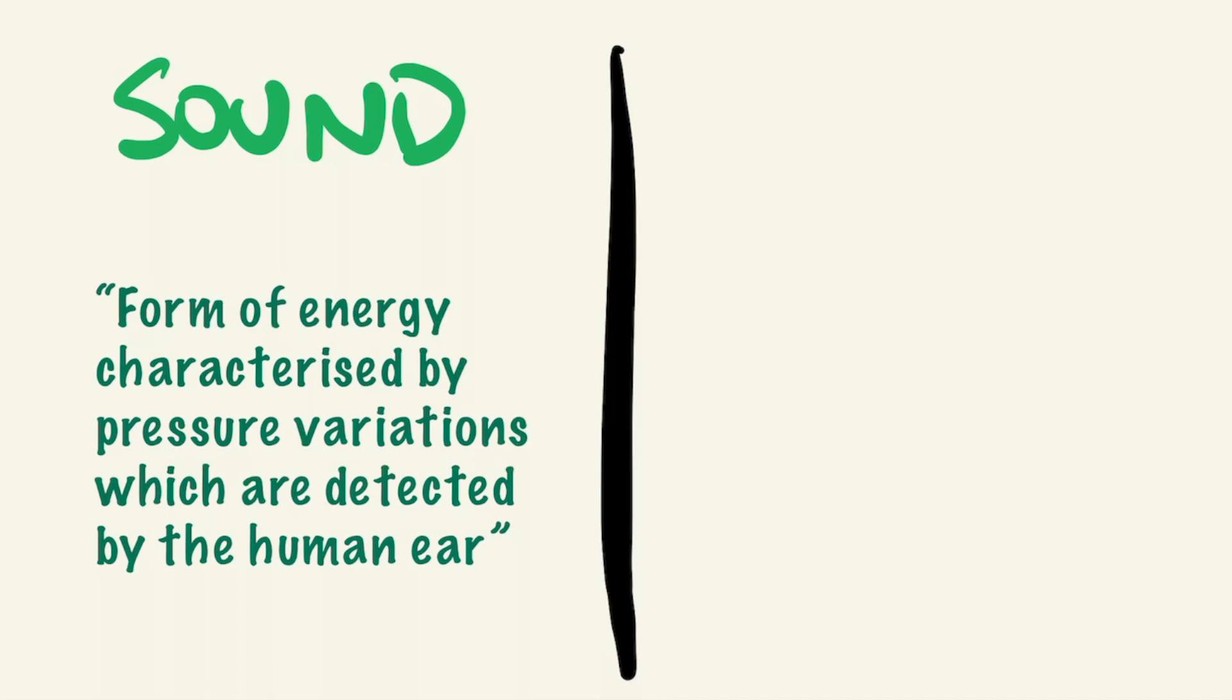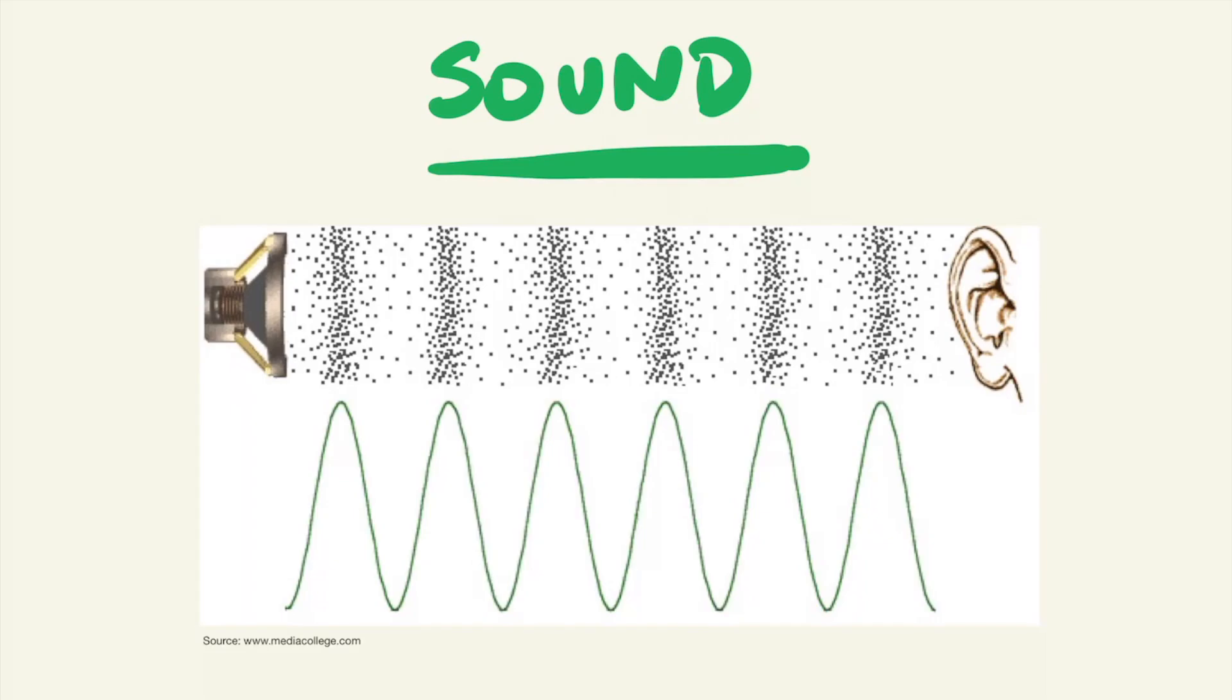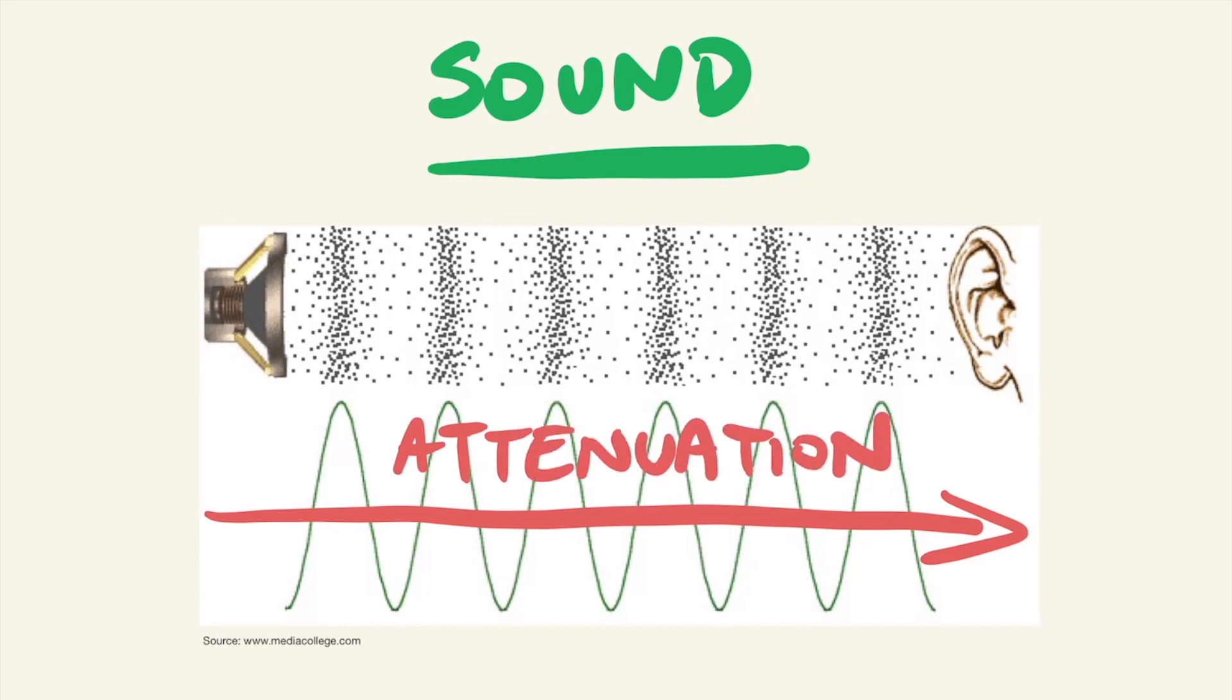Before we can discuss more about noise, we need to provide some definitions for clarification. Sound is a form of energy characterized by pressure variations which are detected by the human ear. Noise is unwanted sound and is related to a number of factors including magnitude, characteristics and duration. Sound is generated through the compression of air molecules, with the transfer of energy from one neighboring air molecule to another, creating a ripple effect as it propagates through a particular medium.